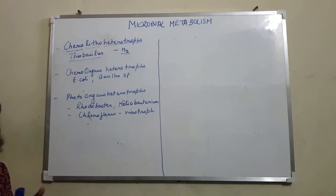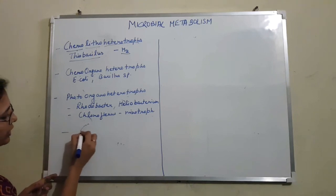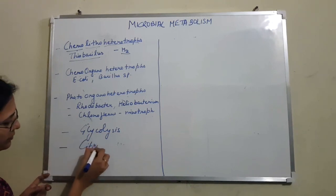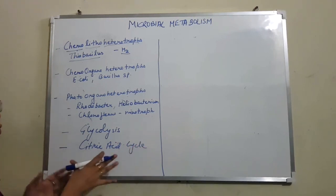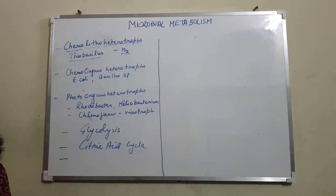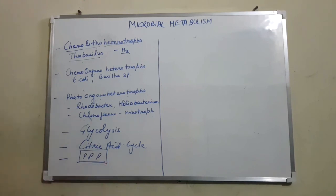Most prokaryotes use the most basic types of metabolic pathways for obtaining energy and utilizing carbon sources. They utilize glycolysis for sugar metabolism and the citric acid cycle to degrade acetate and obtain energy in the form of ATP. These are the most common pathways used by all prokaryotes. However, there are exceptions — certain other metabolic pathways like the pentose phosphate pathway can also be used by some prokaryotes as an alternate pathway.